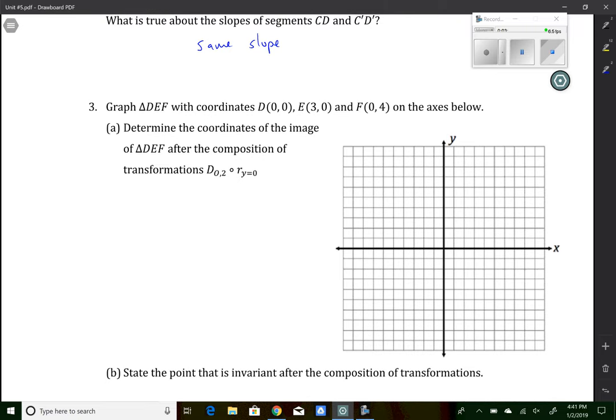Number three is combining a couple of things that we did in a previous chapter with what we just learned today. So today we learned that dilations are centered at the origin, have scale factors. So this is telling us a scale factor of two. This is telling us to reflect over the line y equals x. The line y equals x is just the x axis.